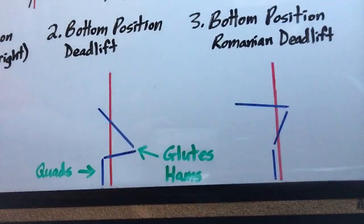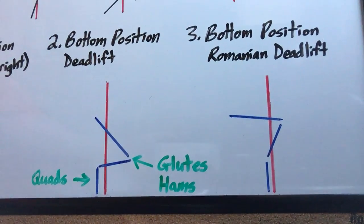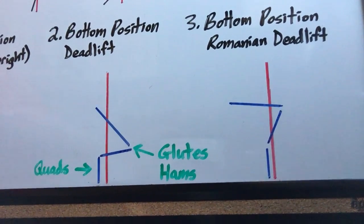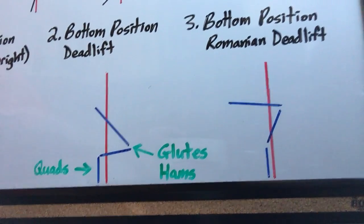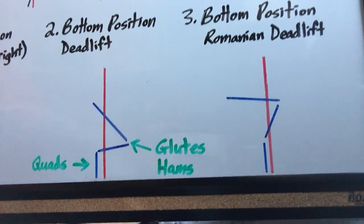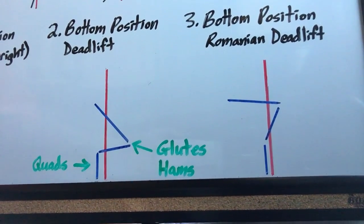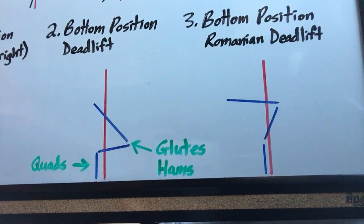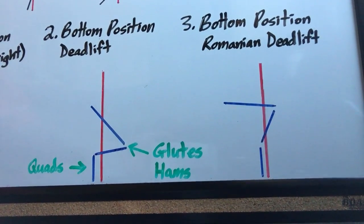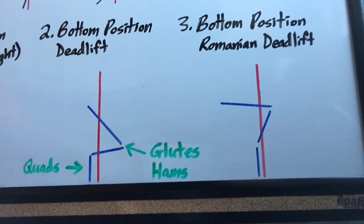Now we have the bottom position of a traditional deadlift and the bottom position of a Romanian deadlift. Now this is not an exhaustive list in terms of how many different types of deadlifts there are. There's other types as well, like a sumo deadlift where you'd perform that with your feet spread wider, but that's not necessary to illustrate the point here.